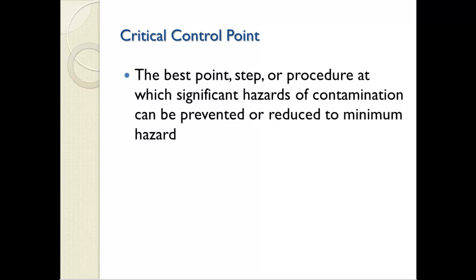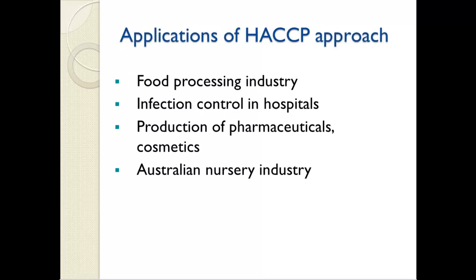The notion of critical control points is very important. A critical control point is the best point, step, or procedure at which significant hazards of contamination can be prevented or reduced to a minimum — essentially a key point of vulnerability. HACCP is widely used in the food processing industry. In the U.S., orange juice, seafood, and meat are all processed according to HACCP requirements. Some hospitals, pharmaceutical companies, and cosmetic companies also use it to prevent contamination in their products.